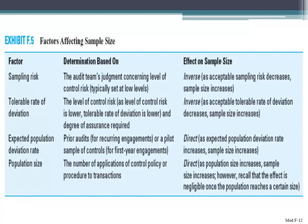From a practical standpoint, if you deem internal controls effective and you've tested them and found the client has strong, effective controls, those controls are going to operate the same way all the time. So whether the client has 500,000 transactions, that doesn't mean you have to look at 50,000 items. Think about it: internal controls should happen the same way all the time. You have to consider the expected population deviation rate, the sampling risk, and the tolerable deviation rate together.